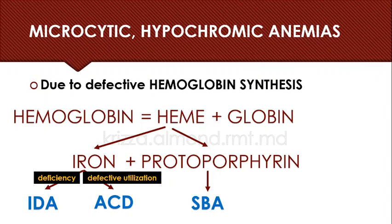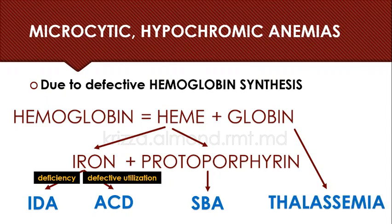There is one more component that can be affected — the globin portion. If the globin portion is affected, that will give rise to inherited conditions known as thalassemia. It can be alpha thalassemia or beta thalassemia. Thalassemias are quantitative defects in hemoglobin concentration.